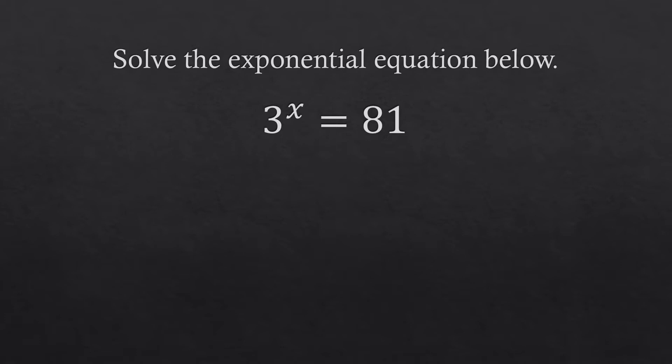Let's apply that in solving this exponential equation. We have 3 to the power of x equal to 81. We want to have the same base on both sides. To do that, we need to express 81 as a power of base 3. We can use a factor tree — starting with base 3 on the left side, so we use 3 here, and its partner is 27, because 27 times 3 equals 81.